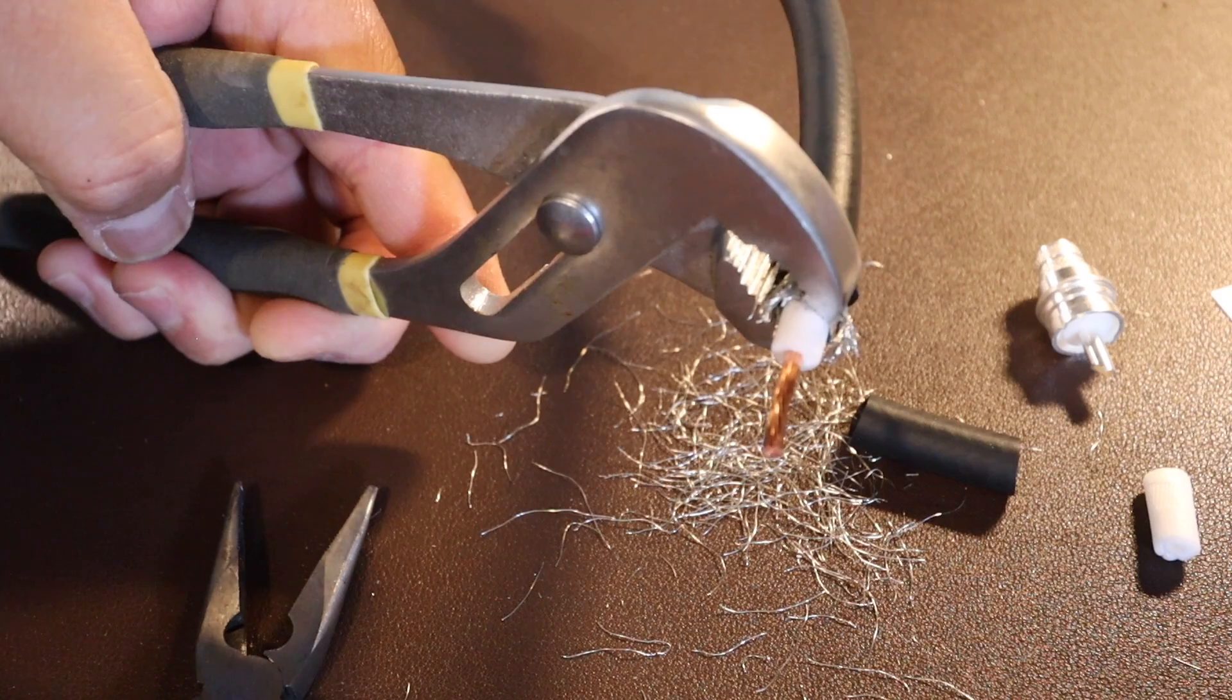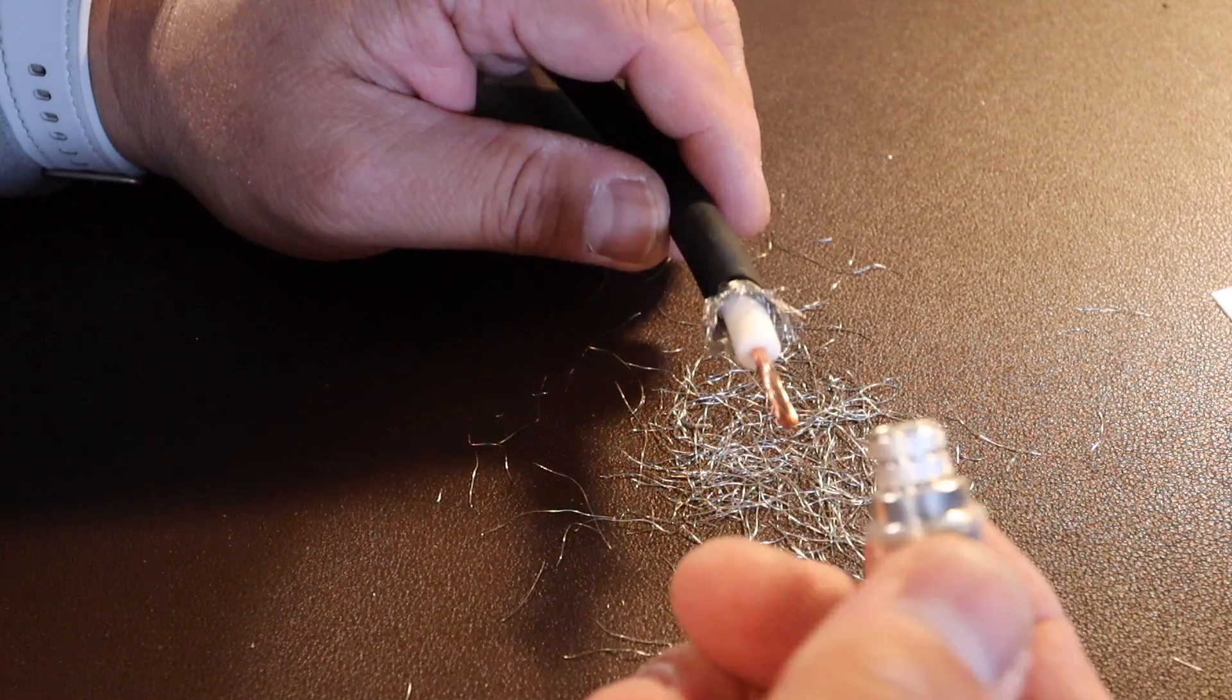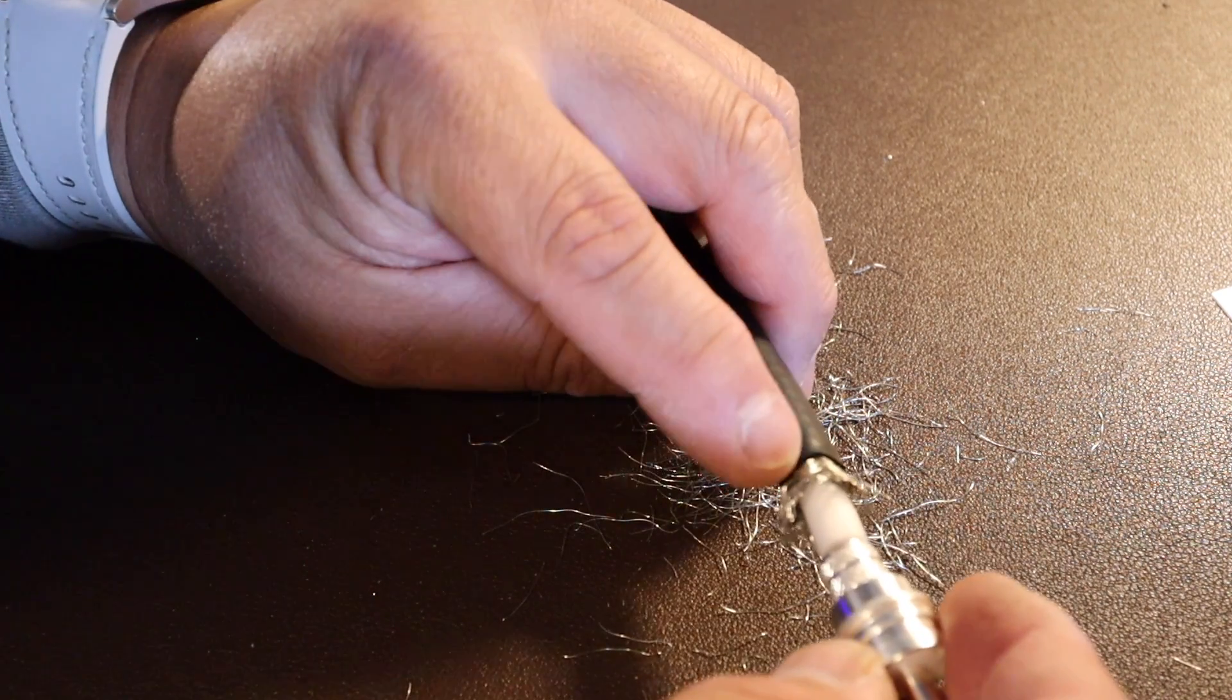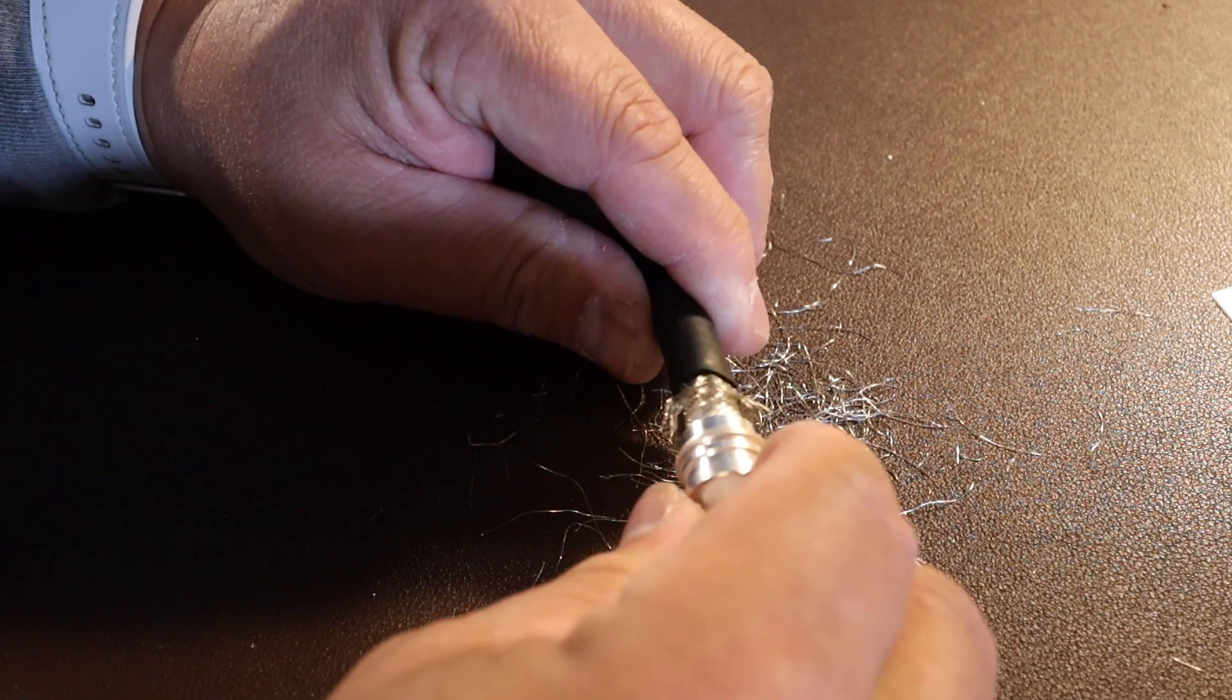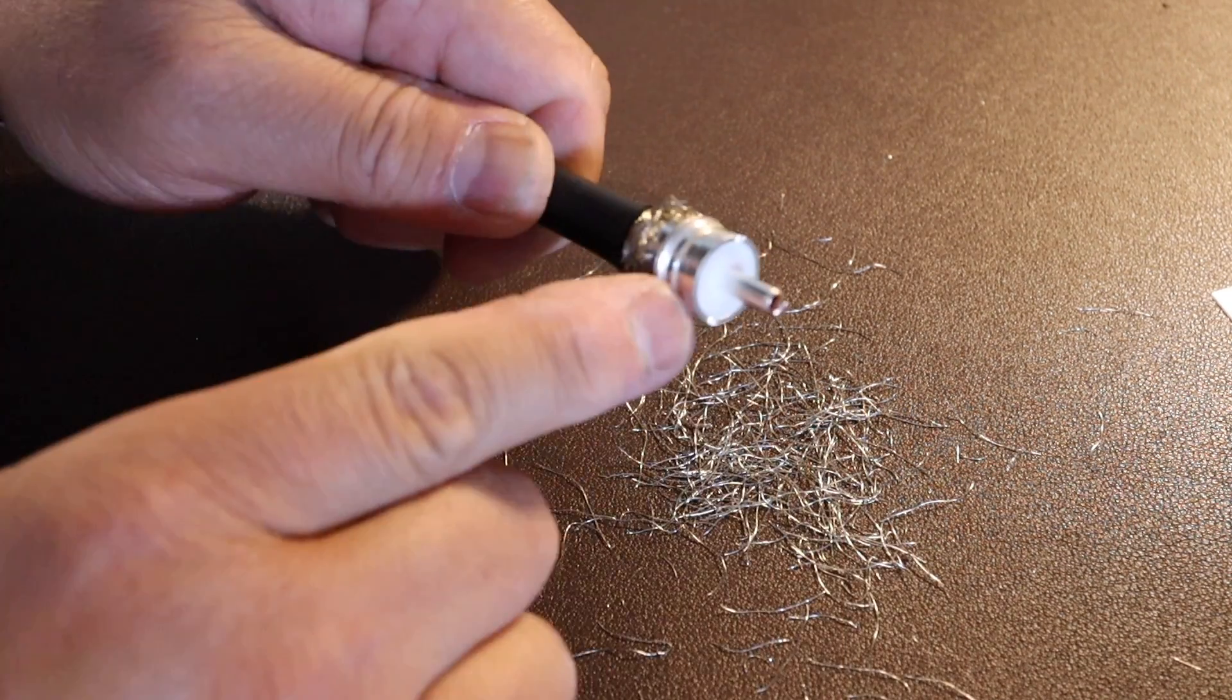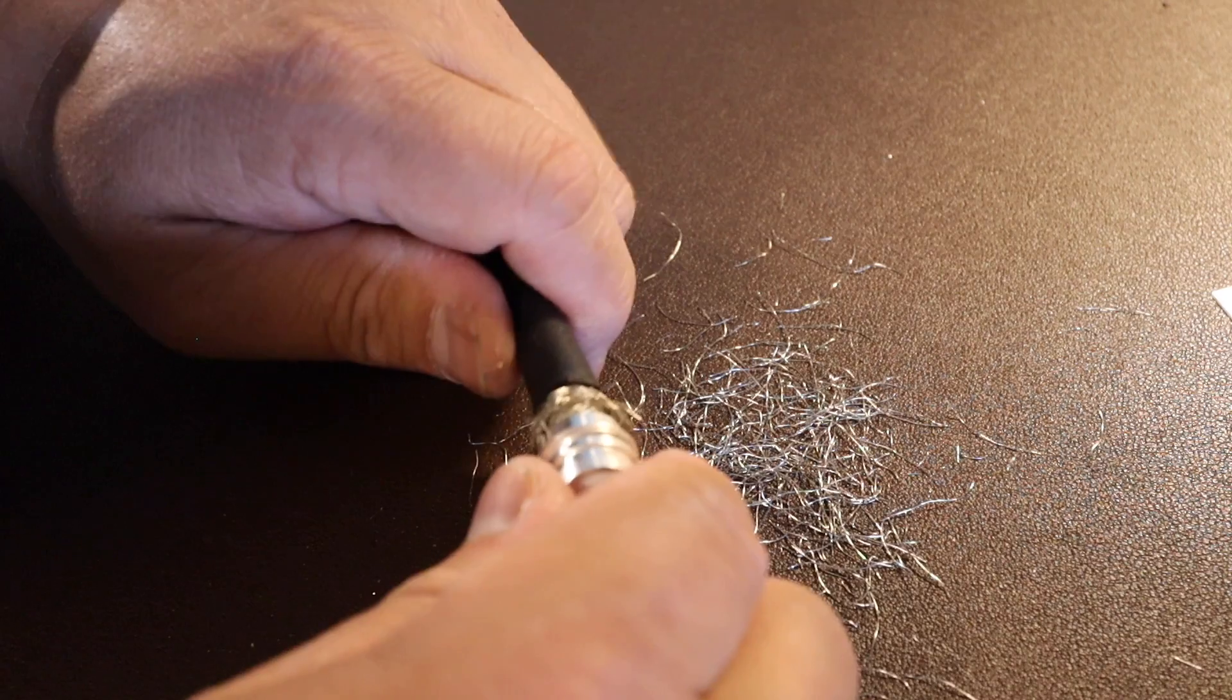There you go. Now we take the PL259, slide it through. The outer shield here is going to go on the inside where the shielding is located. So we're just going to snug it, put underneath there. Now you can see the center conductor come protruding through.